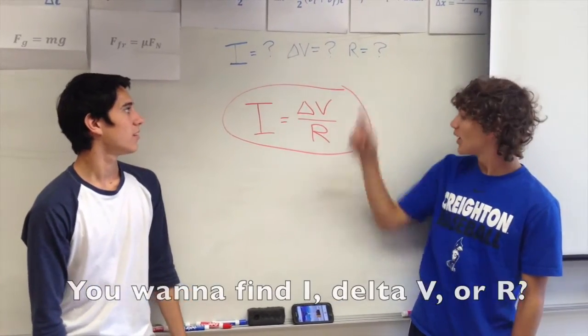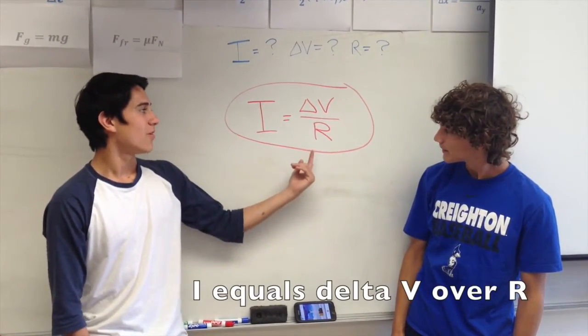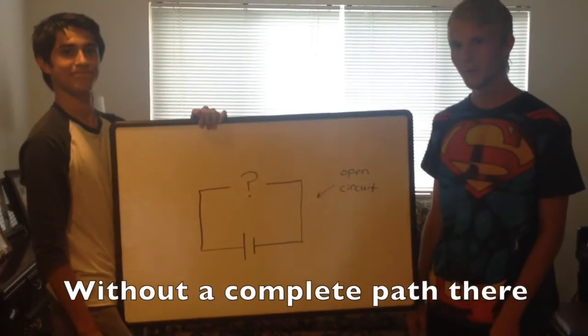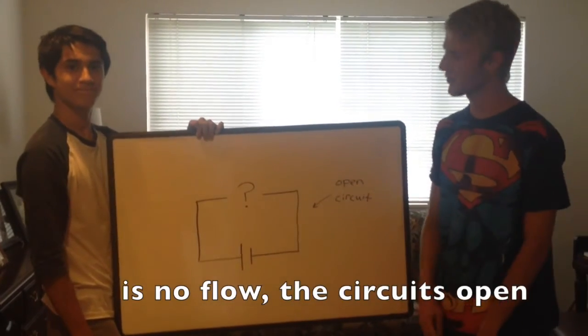You want to find I, delta V, or R? I equals delta V over R. Without a complete path, there's no flow. The circuit's open.